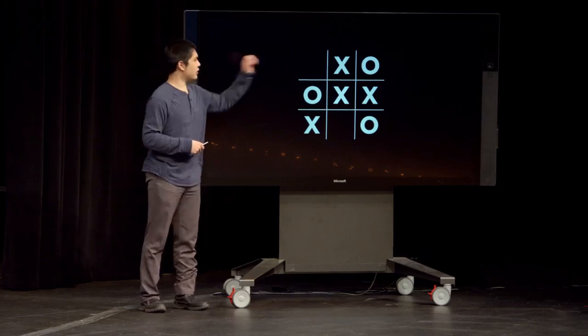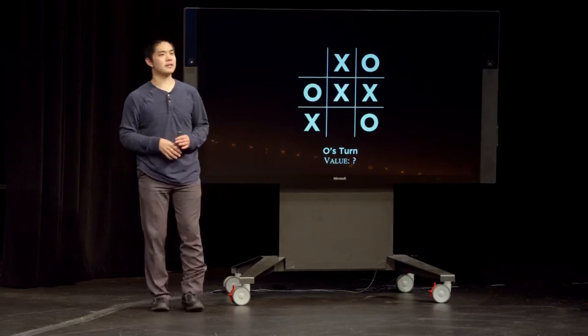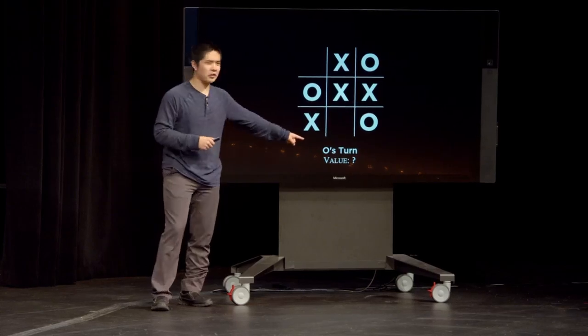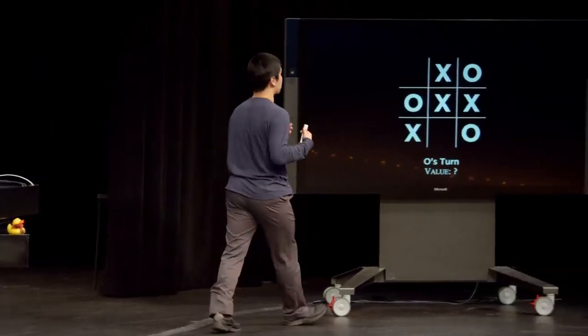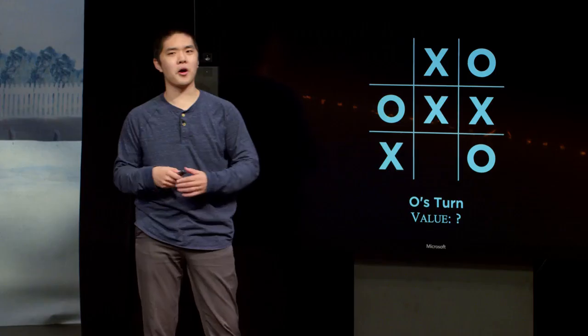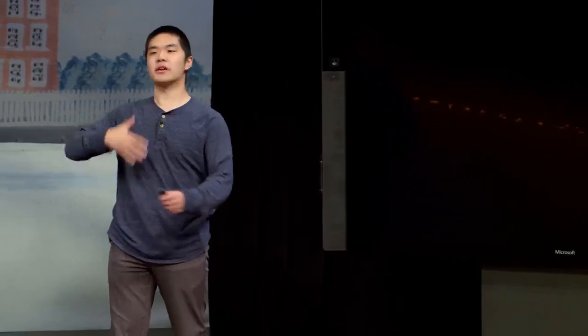Let's consider a trickier board where it's O's turn, with one empty square left after O plays. What value would you give this board? A student correctly answers 0, because if both players play their best moves, O is going to block X, and then X plays in the remaining square — it's a tie. It's certainly possible X could win, but if both players play optimally, O blocks, and the result is a tie with a value of 0.